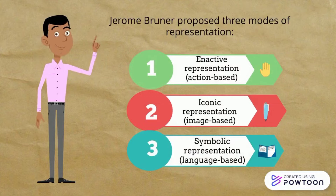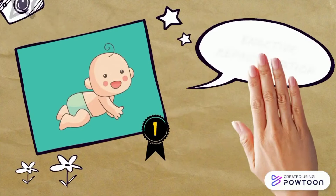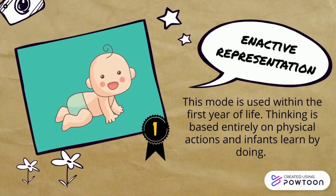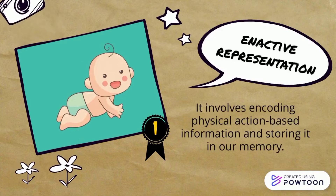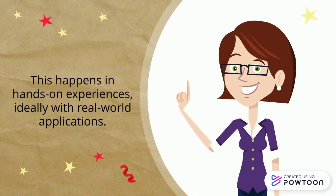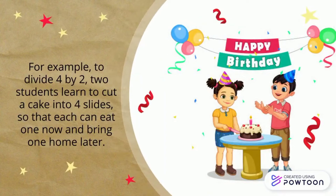For Bruner, we learn first through enactive representation. This mode is used within the first year of life. Thinking is based entirely on physical actions and infants learn by doing. It involves encoding physical action-based information and storing it in our memory. This happens in hands-on experiences, ideally with real-world applications. For example, to divide four by two, two students learn to cut a cake into four slices so that each can eat one now and bring one home later.